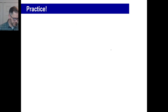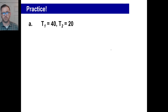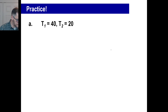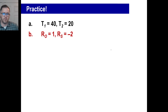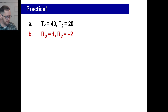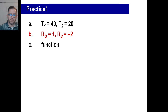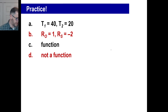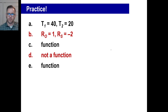Practice time — pause it and try A. If you plugged everything in, the time of the first vehicle is 40 and the time of the second is 20. Try B — that gives 1 and negative 2; not sure how you do a rate of negative 2, going back in time I guess. Try C — yes, that is a function; put your vertical line anywhere, it only hits at one point. Try D — no, not a function; your vertical line hits more than one place. Try E — yes, E is a function; it looks close but a vertical line only hits it at one point.